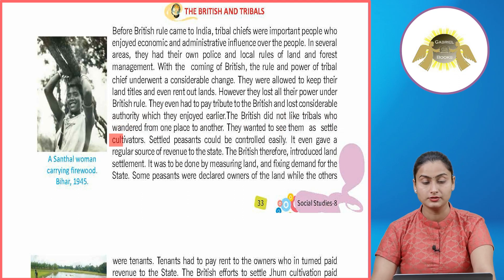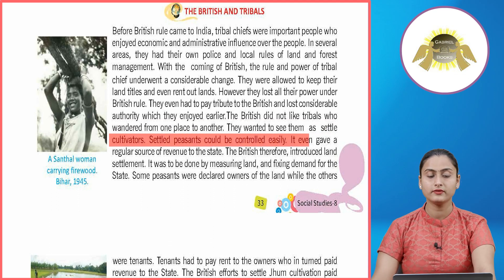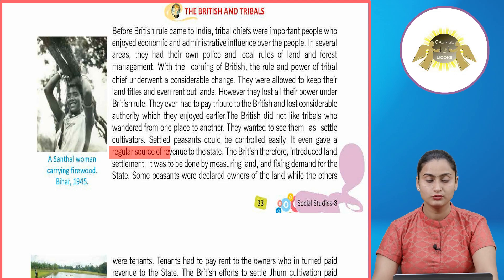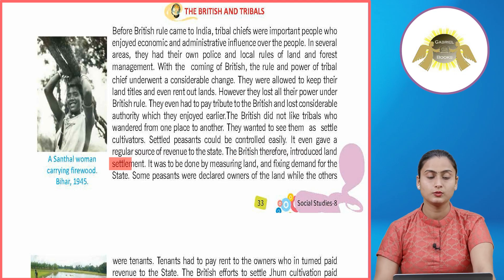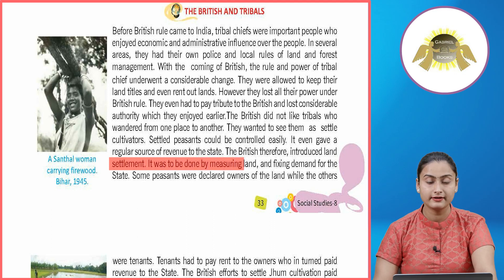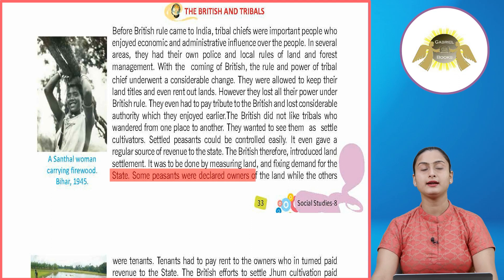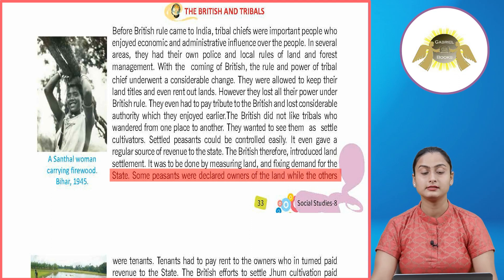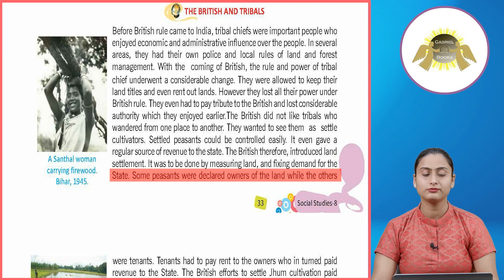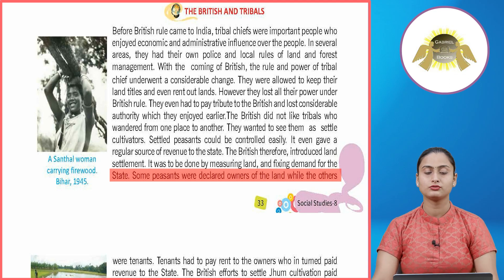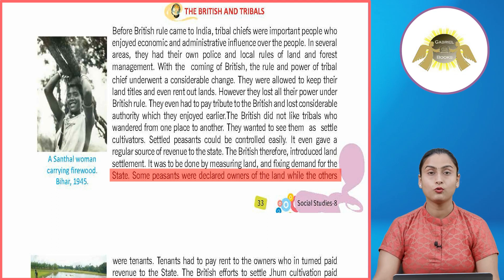The British did not like tribals who wandered from place to place; they wanted to see them as settled cultivators, as settled peasants could be controlled easily and provided a regular source of revenue. The British therefore introduced land settlement — measuring land and fixing demand for the state. Some peasants were declared owners of the land, while others were tenants who paid rent to the owners, who in turn paid revenue to the state.